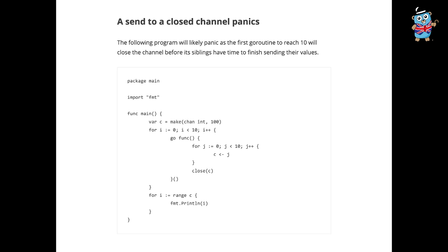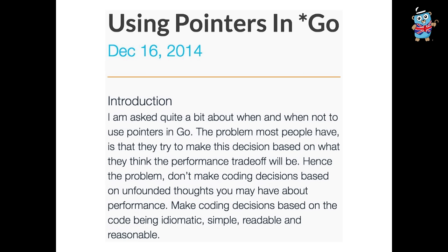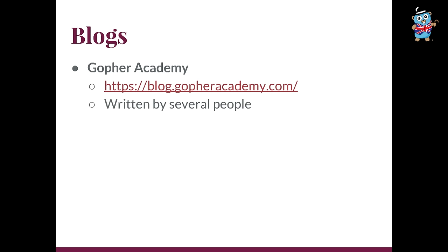What I was looking for was: my channel was panicking and I had no idea why — very little knowledge on channels. So I Googled it, and the first thing that came up was 'a send to a closed channel panic,' answered my question, explains it, has code details, and I was able to fix my problem. There's also Bill Kennedy's blog. My favorite article there is about using pointers in Go, because a lot of the time you're like: do I use pointers, do I not? So there's a great read on that. There's also Gopher Academy. The thing I really like about that one is that it's written by a bunch of different people, so you get different points of view — some people are beginners, some have a lot more knowledge.